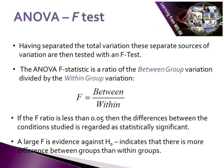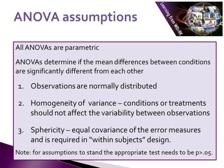Having separated the total variation into within and between sources, we then test this with an F-test. The ANOVA F-test is a ratio of between-group variation divided by within-group variation. If the F-ratio significance is less than 0.05, the differences between the conditions are regarded as statistically significant. A large F-value is evidence against our null hypothesis and indicates that there is more difference between the groups than within groups. All ANOVAs are parametric — they determine if the mean differences between conditions are significantly different, and whether the difference is caused by the manipulation of the independent variable or variables, by separating the variability within the dataset.